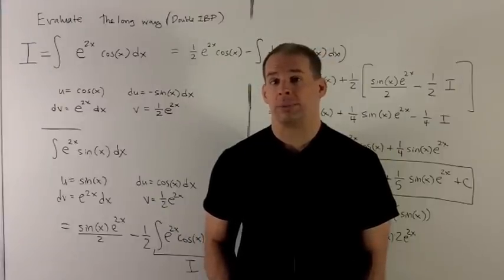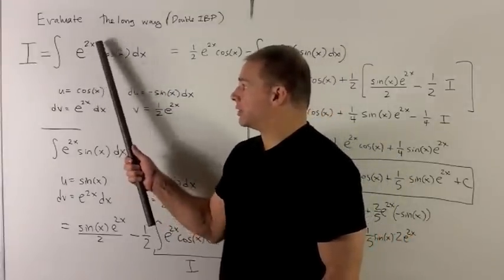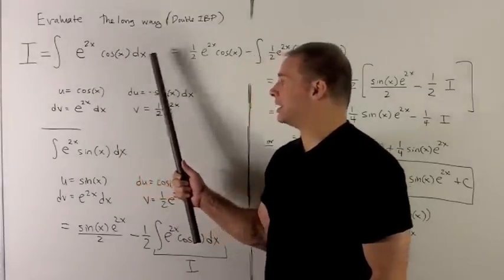Evaluate the following indefinite integral using a double integration by parts. So we're looking at integral e to the 2x cosine x dx.